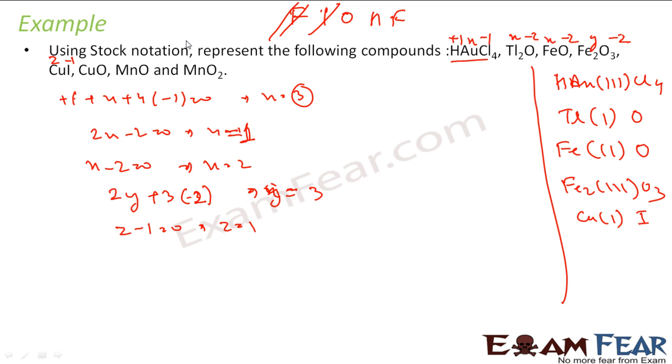CuO. O is minus two, this is let's suppose A. So this becomes A minus two equals zero, you get A equals two. Since A equals two, this becomes Cu(II)O.